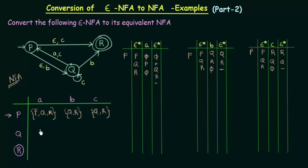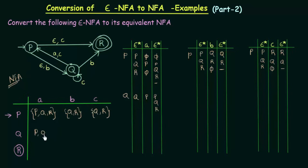Now we are done with state P. Let's do the same for state Q on input A. Epsilon closure of Q is only Q, and Q on input A goes to P. Epsilon closure of P is P, Q and R. So finally we get P, Q and R. That means Q on input A will go to P, Q and R in the NFA that we will be making.